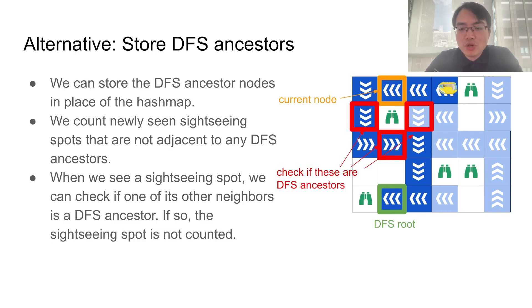So, we will store all the DFS ancestors from the green DFS root to our current node in the hash map. And then we will check if any of the red cell is actually among them. This approach has essentially the same time and space complexity as our previous approach.